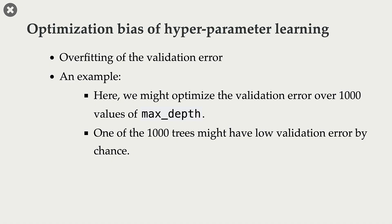Overfitting can also occur during hyperparameter learning — that is, when you tune hyperparameters. When you carry out hyperparameter optimization using methods such as GridSearchCV, you usually try out many different possibilities. For example, if you are carrying out hyperparameter optimization for a decision tree classifier, you might try over thousands of values of the max-depth hyperparameter.